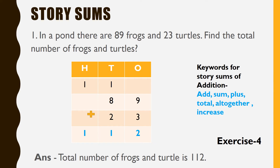On this slide, we are going to solve story sums of addition. I have taken the first example of exercise number 4: in a pond, there are 89 frogs and 23 turtles. Find the total number of frogs and turtles. Whenever we get keywords like add, sum, plus, total, altogether, or increase, we have to do the addition. In this example, the keyword is total, so we have to do the addition of these two numbers.